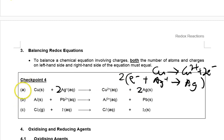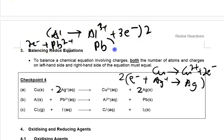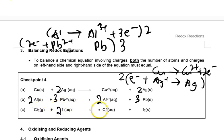For Al plus Pb²⁺ to Al³⁺ plus Pb: Al loses 3 electrons to form Al³⁺, while Pb²⁺ gains 2 electrons. Multiplying the first equation by 2 and the second by 3, we get: 2Al plus 3Pb²⁺ gives 2Al³⁺ plus 3Pb. For the last equation: Cl₂ plus 2I⁻ gives 2Cl⁻ plus I₂.